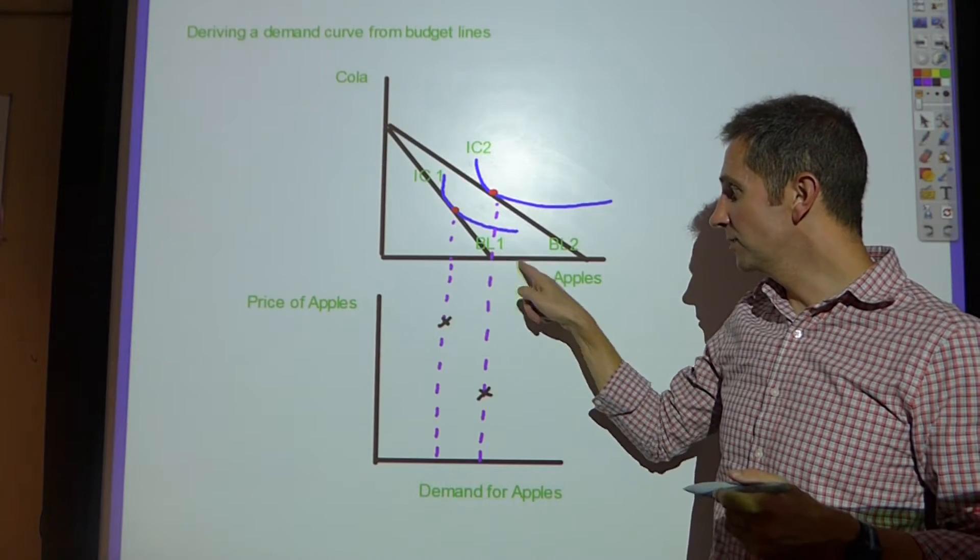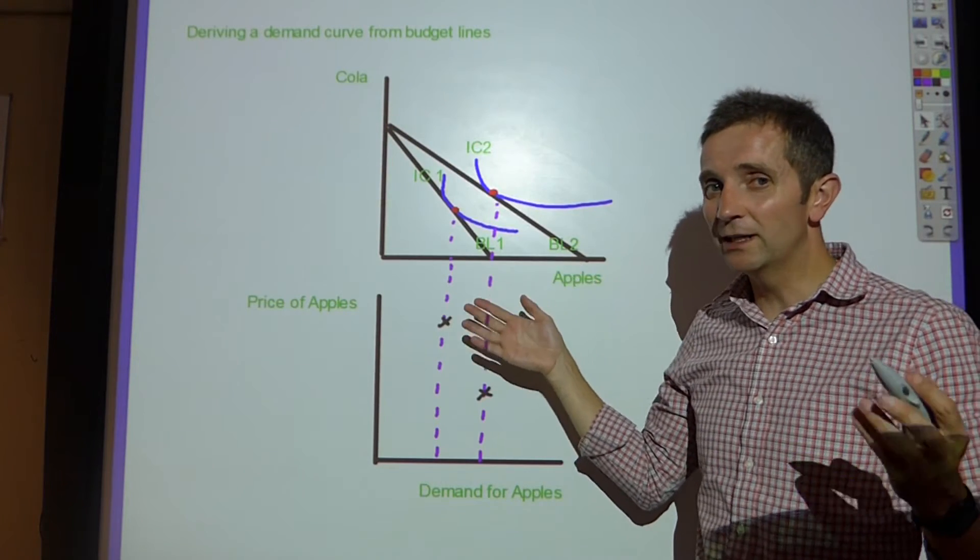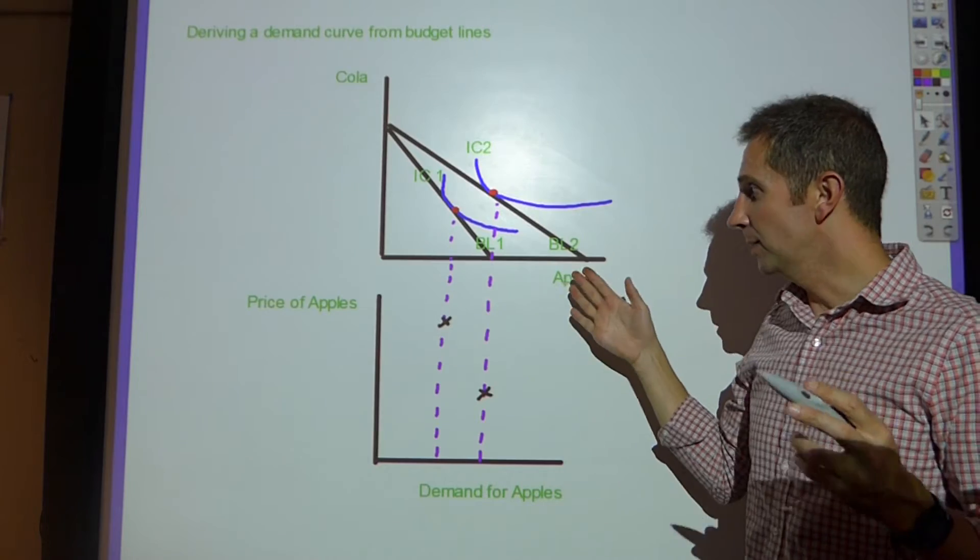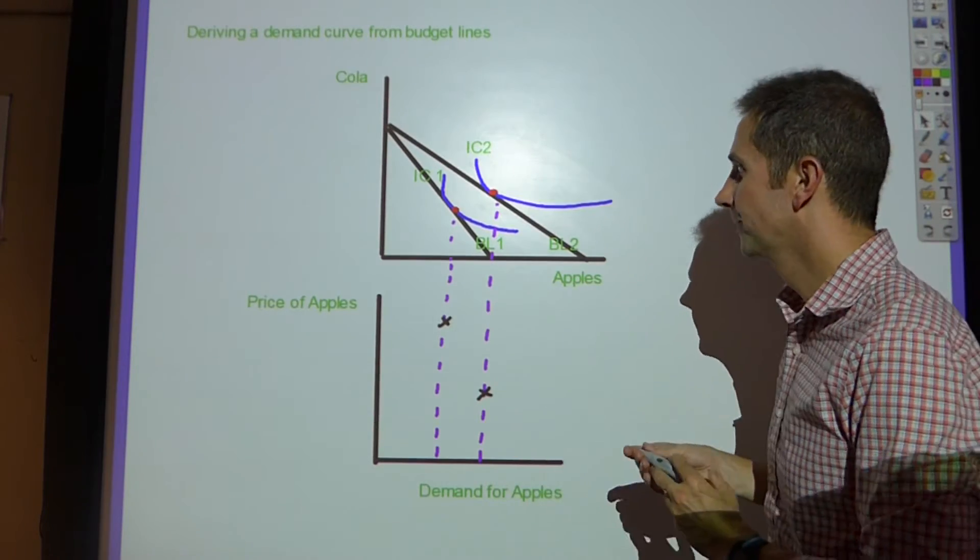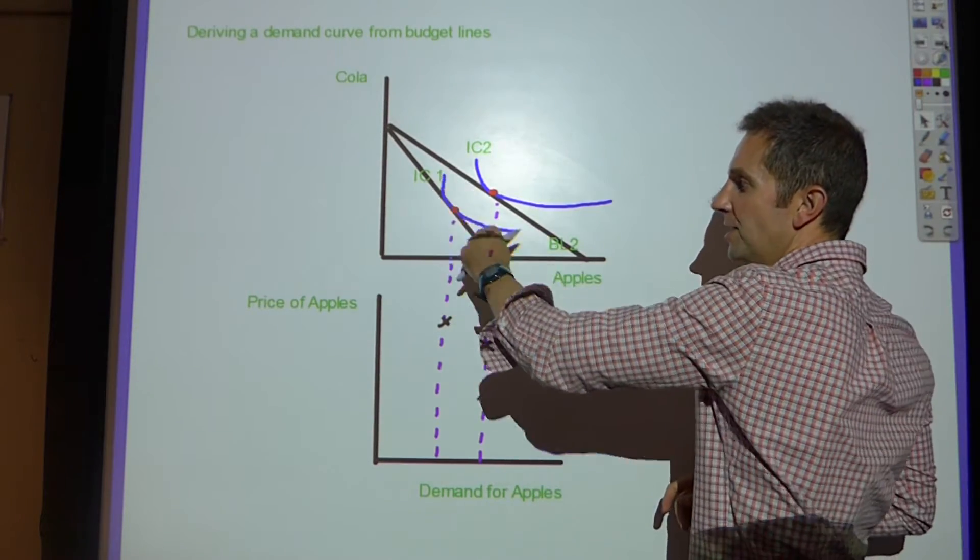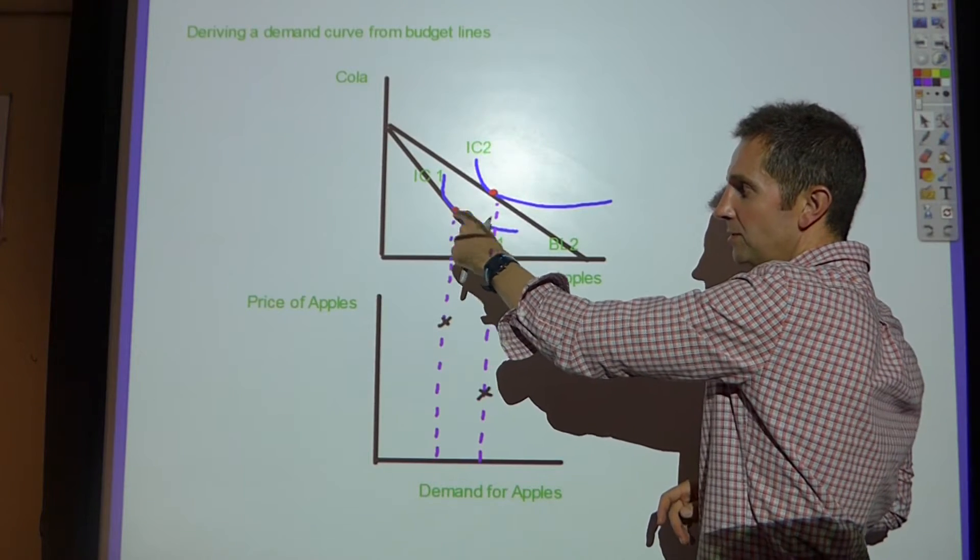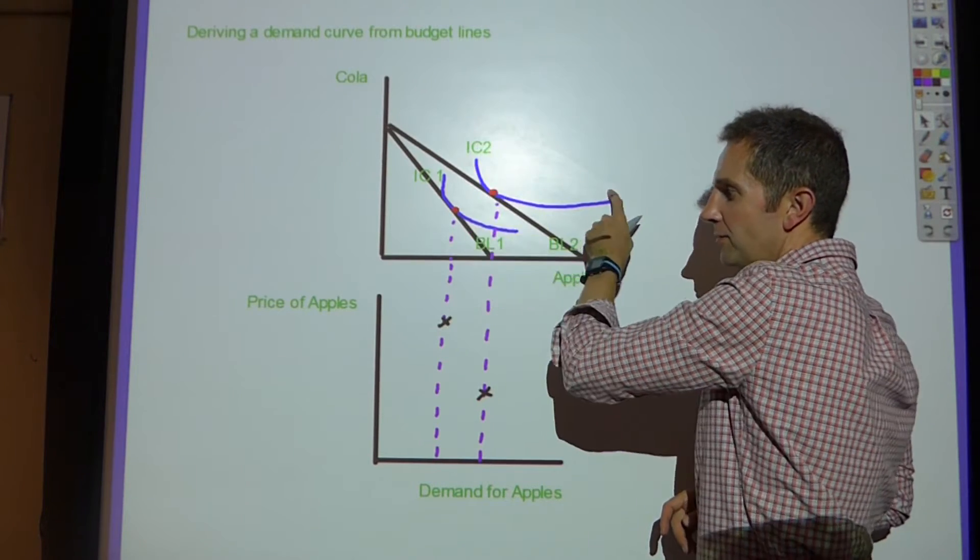However, we can consume more apples and income hasn't changed. That must be because the price of apples in this case have fallen. So we've gone from IC1, indifference curve 1 at this point, to IC2, indifference curve 2.